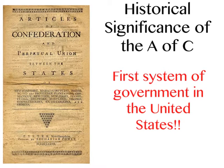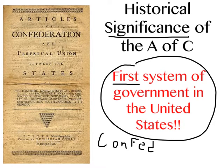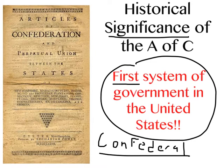Now that we understand the historical context, let's talk about the significance of the Articles of Confederation. The key significance is that it was the very first system of government used in the United States. The Articles of Confederation were a confederal government — a league of loosely connected independent states. It's kind of like the difference between being really best friends versus casual acquaintances who hang out every so often.